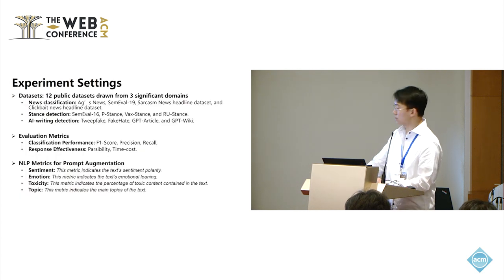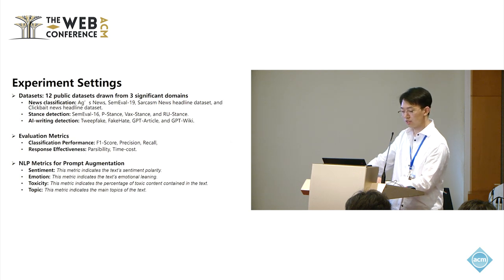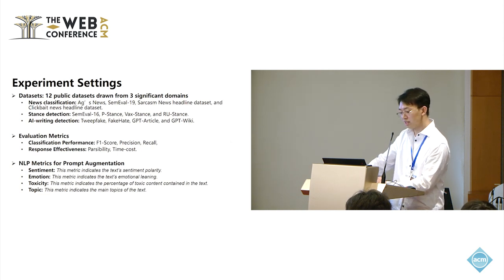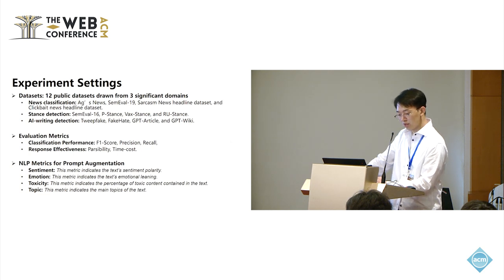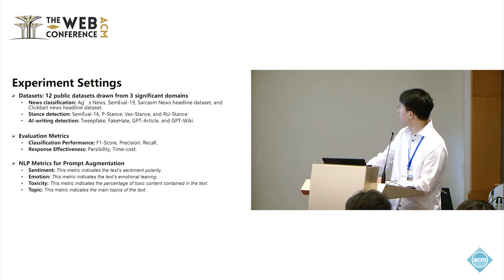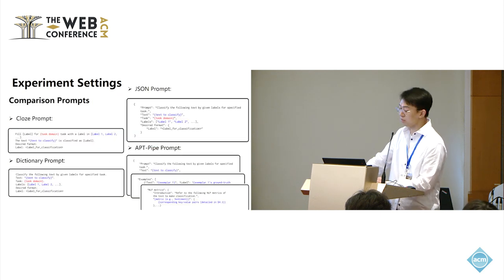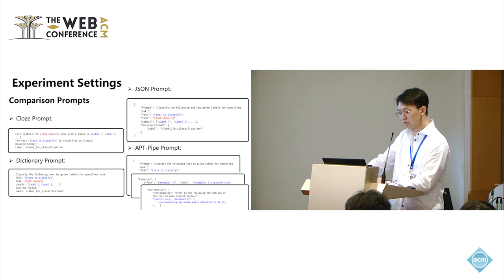For the experiment setting, we conduct experiments on 12 public datasets drawn from three significant domains: news classification, stance detection, and AI writing detection. We evaluate APTPipe on classification performance metrics like F1 score, precision, and recall rate, as well as response effectiveness such as parsability and time cost. The NLP metrics used in step 3 for prompt augmentation are sentiment, emotion, toxicity, and topics. For comparison, we compare the annotation performance of a closed prompt, dictionary prompt, and pure JSON prompt against our APTPipe prompt.